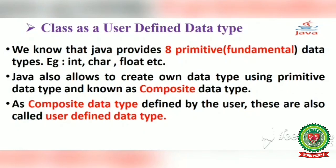For example, if we write int a = 10, then int is the data type, a is the variable, and 10 is the value given to a. But if we write a new value in place of 10, say 15, the previous value will be erased.